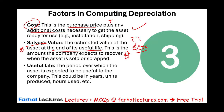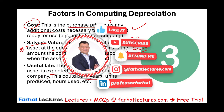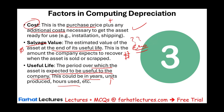The third component is the useful life of the asset — the period during which the asset is expected to be useful for the company. This could be in years, a number of units, or hours used. For our purposes, we're going to look at years and units produced to give a variation of useful life, which is most important for a financial accounting student.